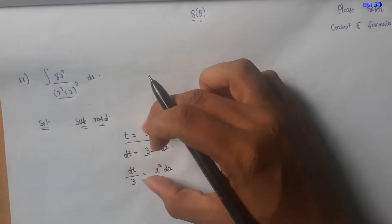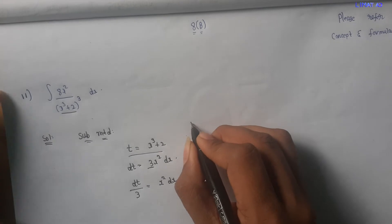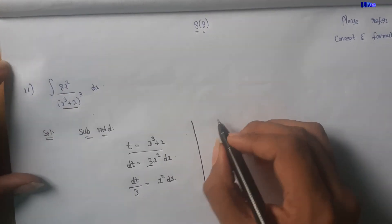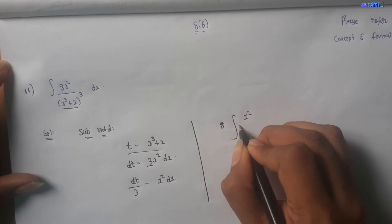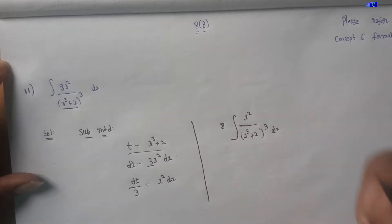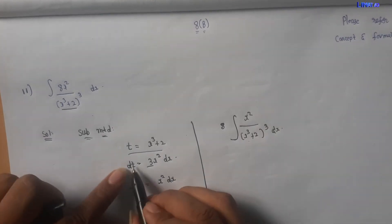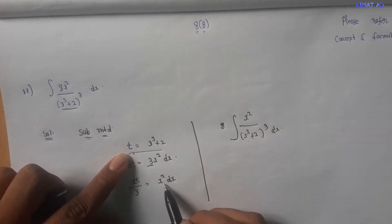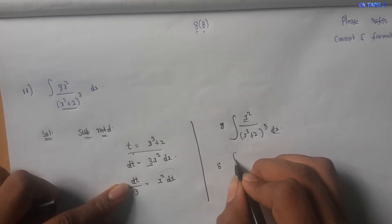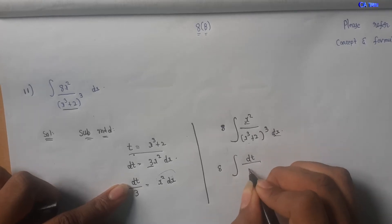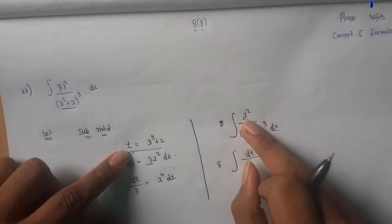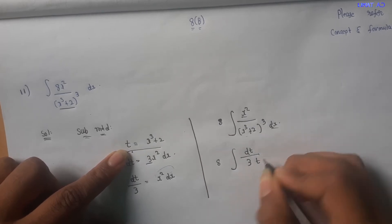Now we substitute into the integral. We get: 8 times the integral of x² divided by (x³ + 2)³ dx. After substitution with t = x³ + 2, this becomes the integral of dt divided by 3, with x² dx replaced, giving us the integral in terms of t.